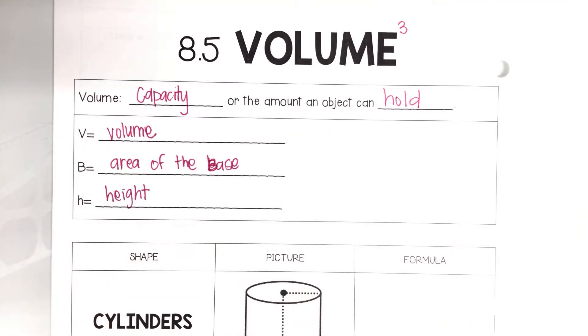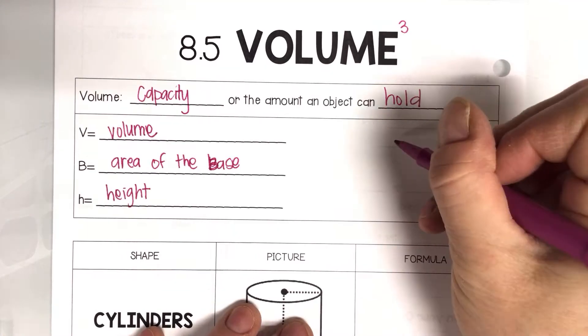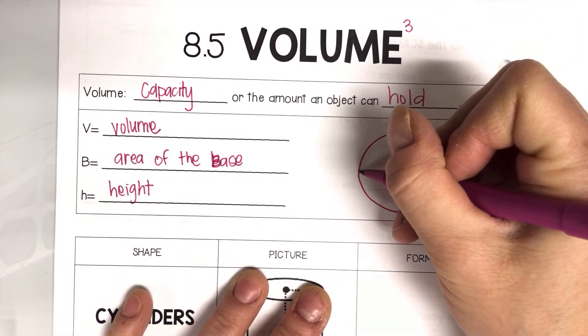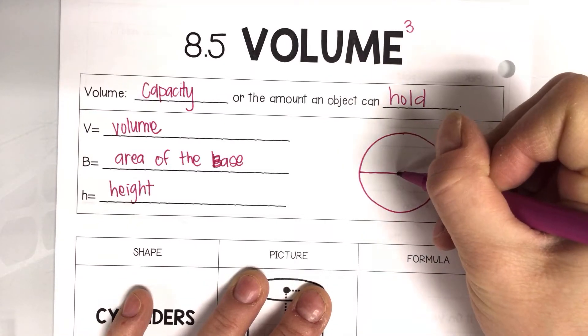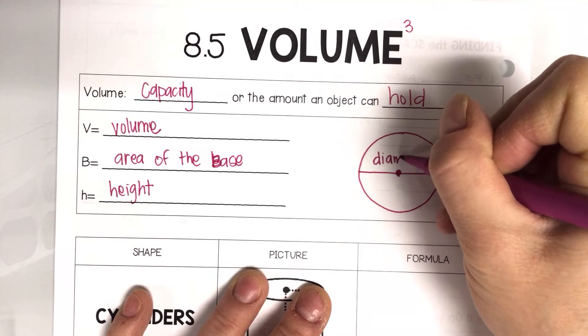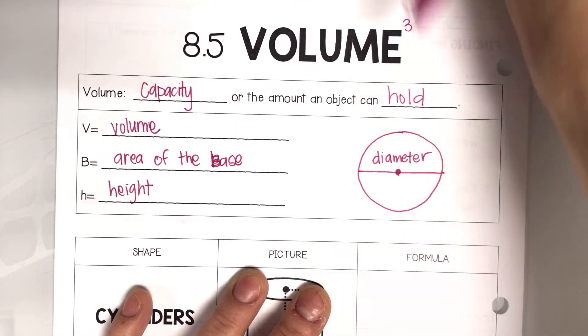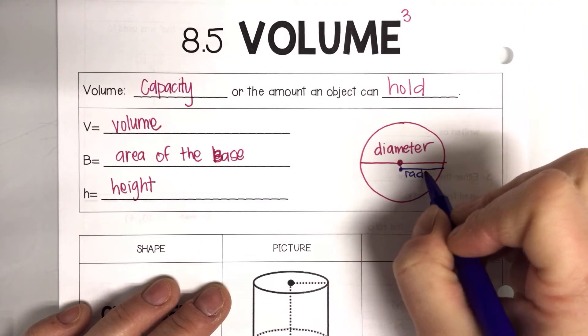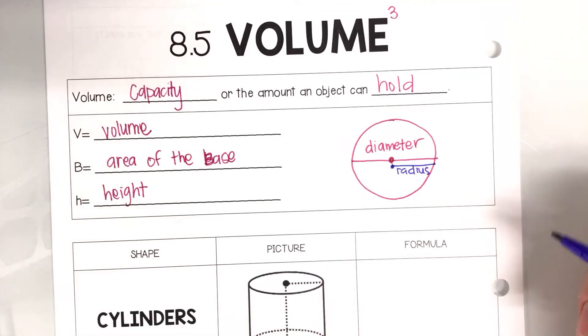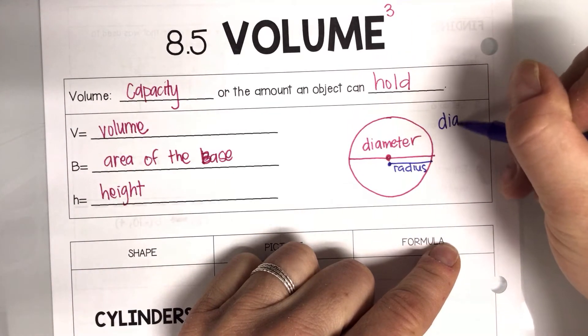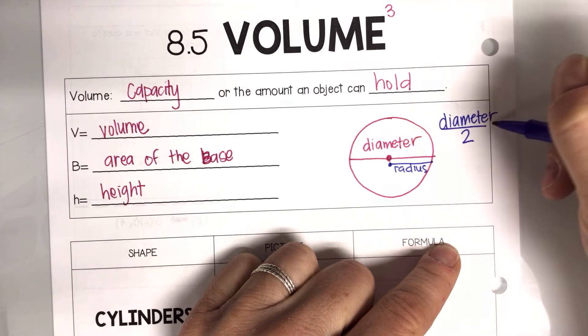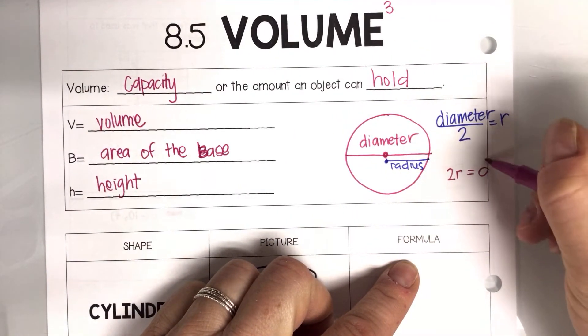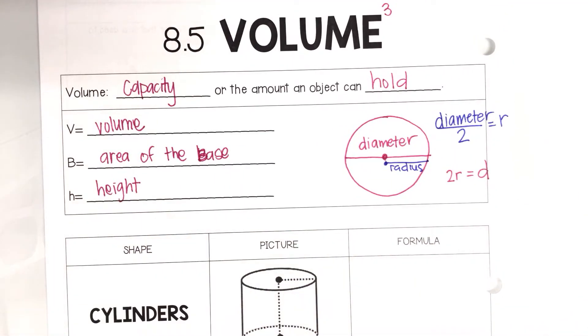A couple reminders, and this goes straight back to last year. First and foremost is in a circle. We need to know that the diameter is the whole distance across and it goes through the center. And then our radius is half of our diameter. Our radius only goes halfway across. So you could find the radius if they give you the diameter, you divide it by two and get your radius. If they give you the radius, you could do two times your radius and get your diameter. We won't need diameters today, but you'll need to know how to find the radius.